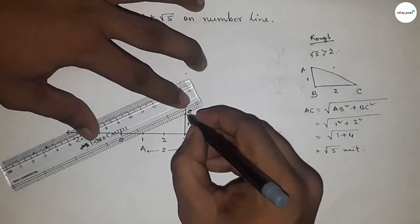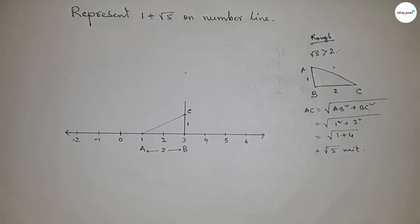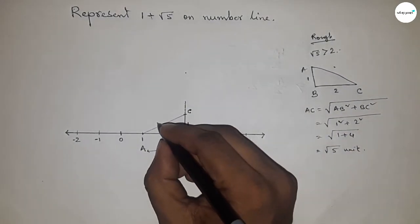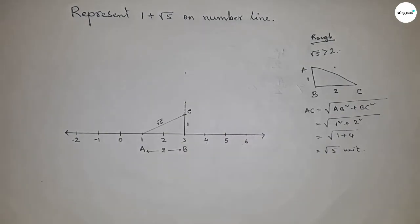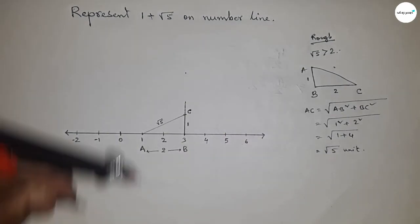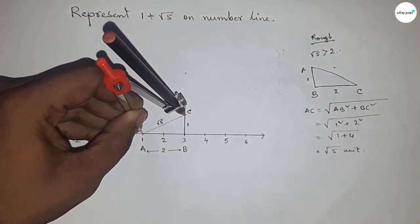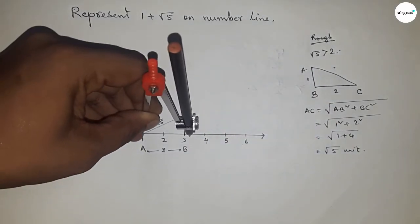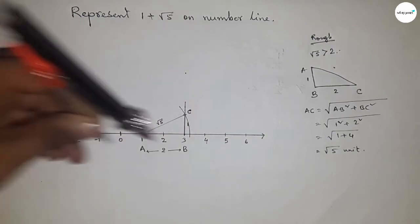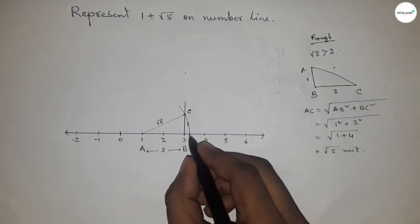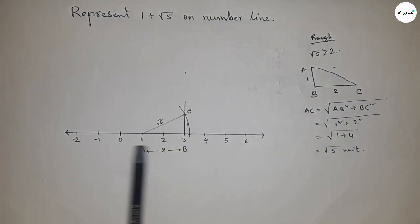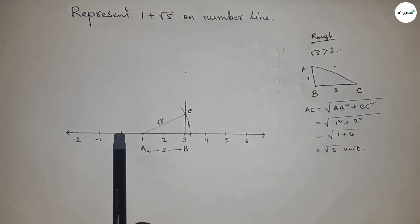Now join this. From this we can say the hypotenuse will be root 5. Now take the distance AC with the compass and draw an arc which meets the number line at a point.